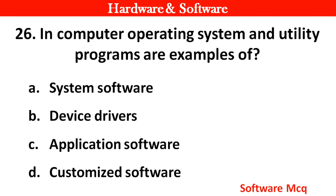Question 24: In computers, operating systems and utility programs are examples of? Options: A. System software, B. Device driver, C. Application software, D. Customized software. Right answer is option A — System software.